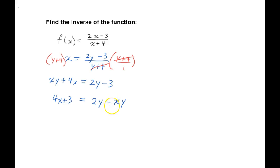Now we want to get y by itself, so I'm going to factor a y out of these two terms. So that gives 4x plus 3 equals y times 2 minus x.